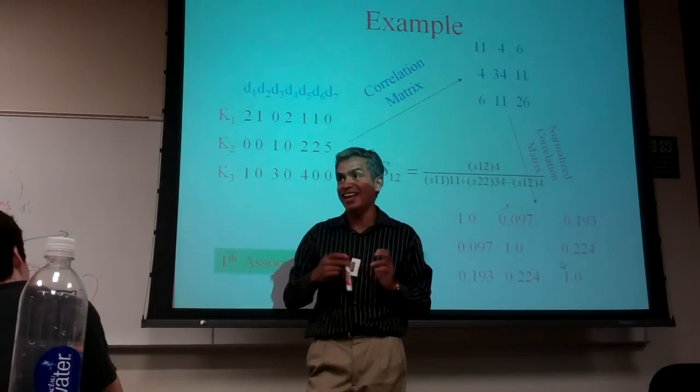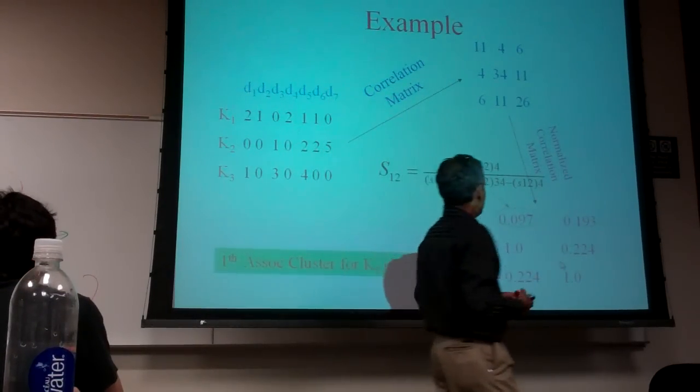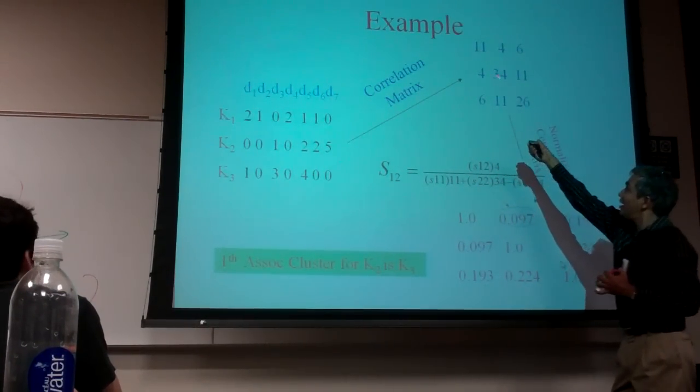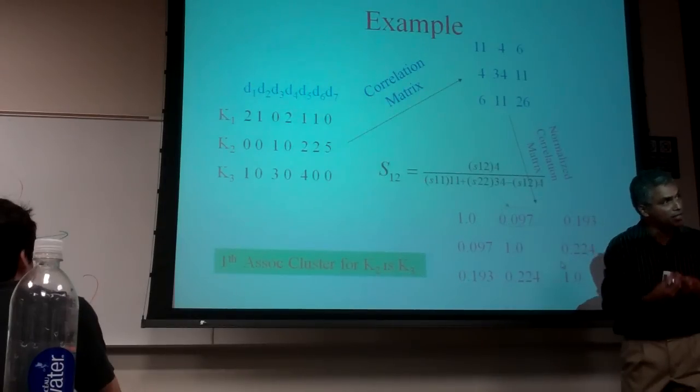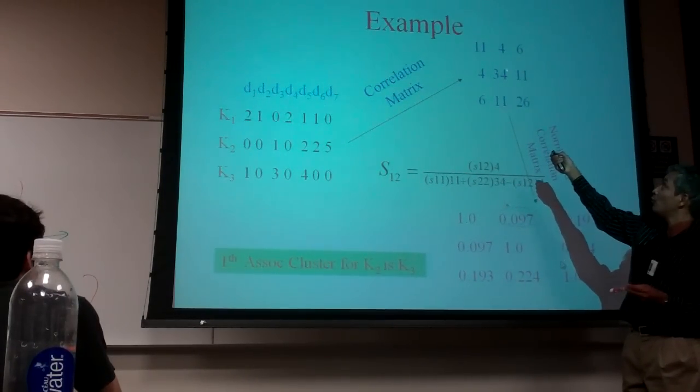They are less similar to themselves than they are to other terms, right? So in every row, the diagonal elements in that row would be the largest. And so in this row, for example, I can say 11, 4, 6.